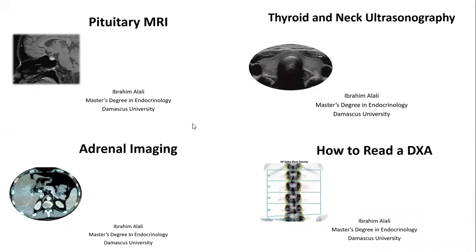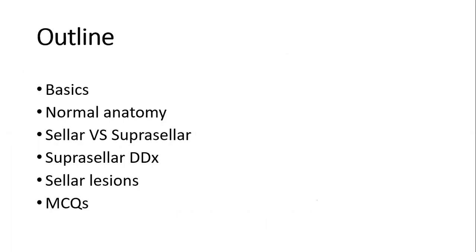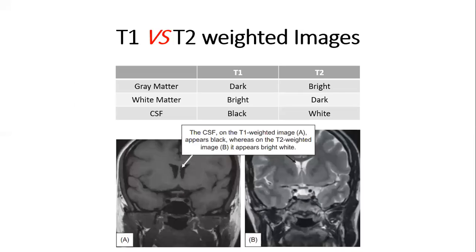I will start this lecture. This will be my first lecture in this series. I will talk about pituitary MRI, how to interpret images, just for those interested in reading pituitary images. In this lecture, I will talk about basics, normal anatomy, how to differentiate between sellar and suprasellar masses, what is the differential diagnosis of suprasellar masses and sellar lesions, the most common sellar lesions. And finally, we'll take some multiple choice questions.